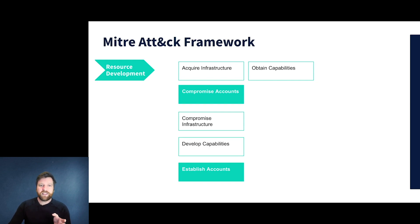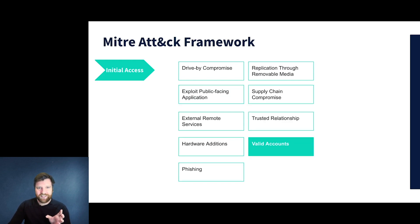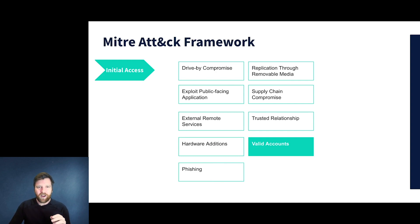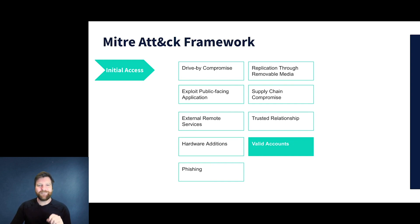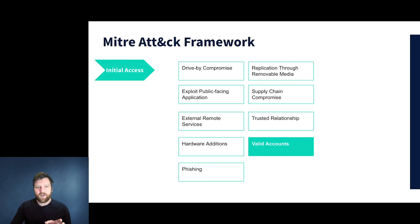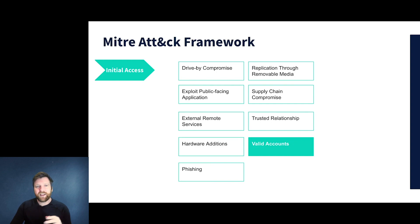For initial access, this is really where the exploit started to gain traction — and we're going to see this theme a lot as we go through the framework. They had valid accounts. It's really hard to detect something that's properly authenticated. This is the telling story of this attack: they gained access to valid accounts.